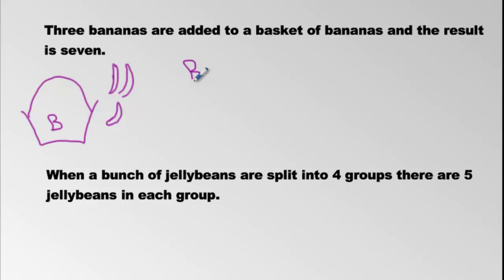So we have a mystery amount, B. We're going to add three more. So three bananas are added, so plus three to a basket of bananas. And the result. Result. Result means equals. Seven. Done.